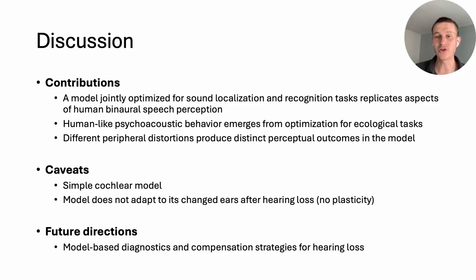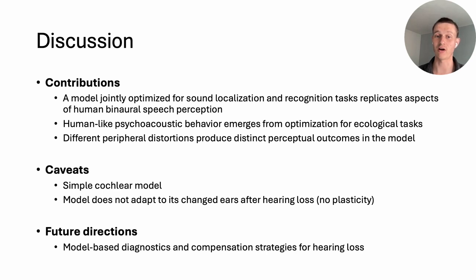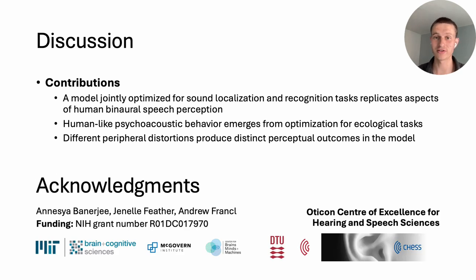To wrap up: I've shown that a model jointly optimized for localization and recognition tasks replicates aspects of human binaural speech perception. Human-like psychoacoustic behavior emerges from optimization for ecological tasks, and different peripheral distortions can produce distinct perceptual outcomes in the model. There are a couple of important caveats: the results are based on a relatively simple model of the cochlea, and they neglect a possible role of plasticity — our model does not adapt to its changed ears after hearing loss. Nonetheless, our model captures important aspects of hearing and could enable exciting future directions, like using it to design diagnostics or compensation strategies for hearing loss. I'd like to thank my collaborators and the funding sources.